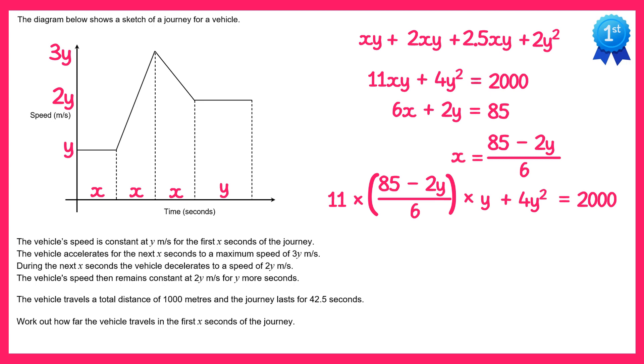If you multiply through by 11 and y the fraction becomes this, and then if we multiply all terms by 6 to remove this fraction, we get 935y minus 22y squared plus 24y squared equals 12,000.